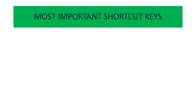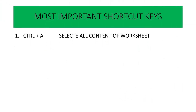Most important shortcut keys. Ctrl A — Ctrl A की मदद से हम worksheet में जितना भी content है उसको एक साथ select कर सकते हैं. The use of Ctrl A is to select all the content of our worksheet.